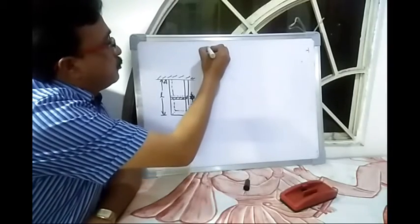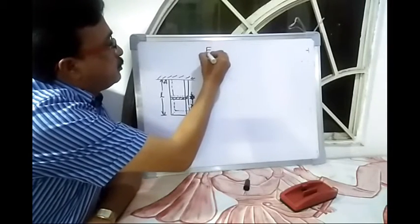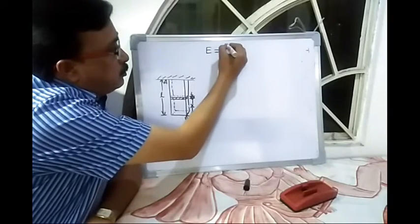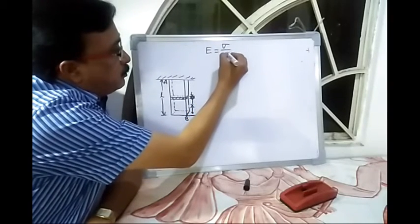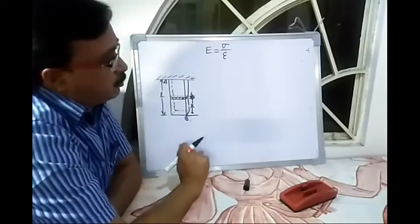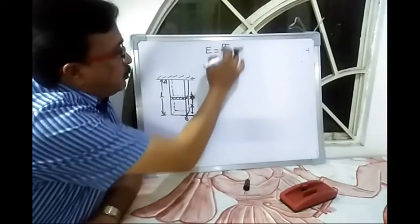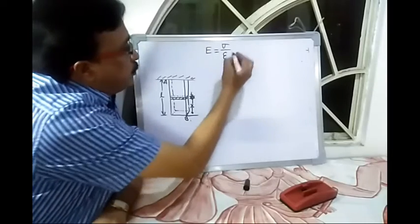We know the modulus of elasticity E is equal to stress by strain. This stress is denoted by sigma and this strain is denoted by epsilon.